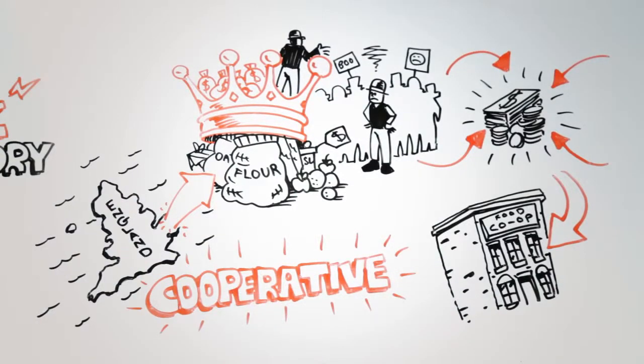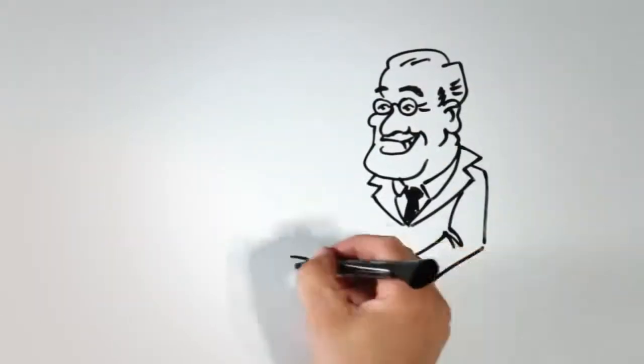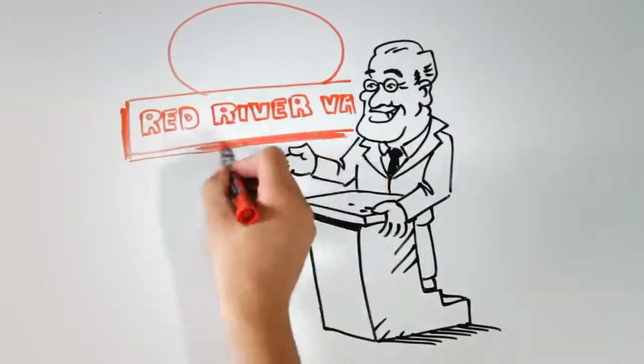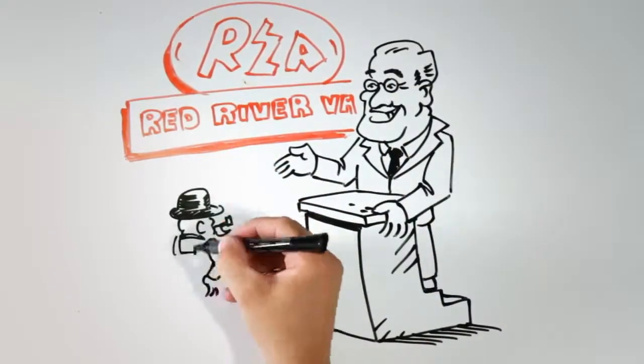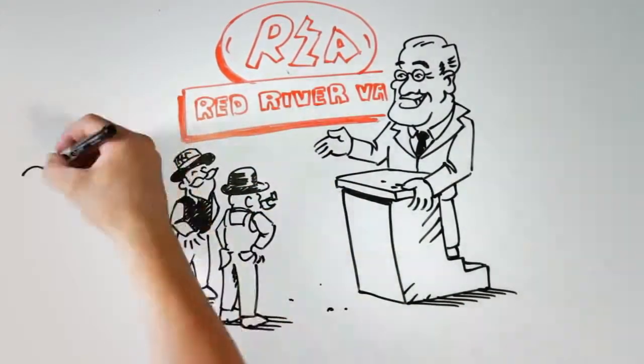President Roosevelt gave electric cooperatives a jump start with the founding of the Rural Electrification Administration, the REA, telling American farmers and ranchers if you want electricity, you can do it yourselves.